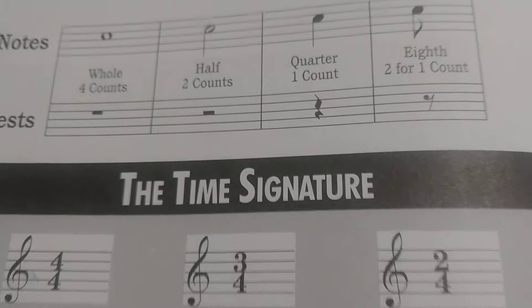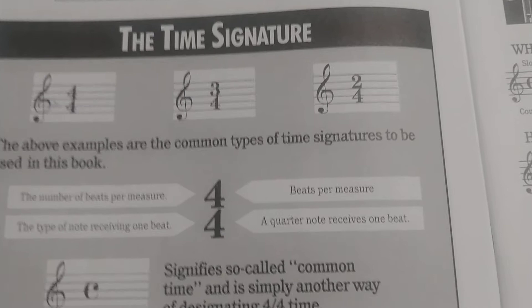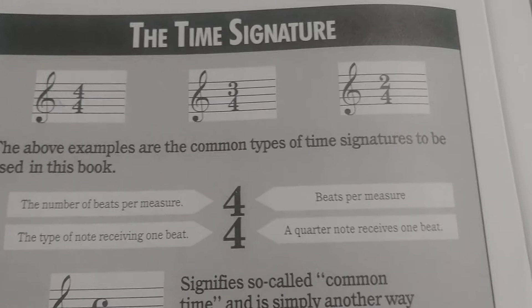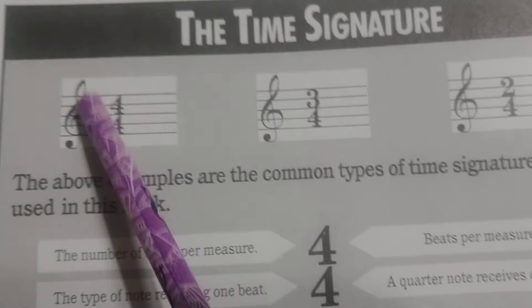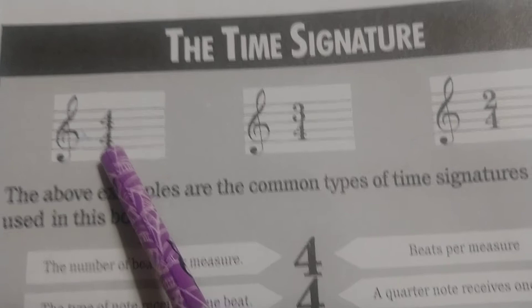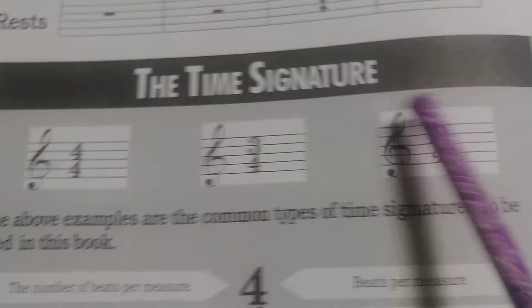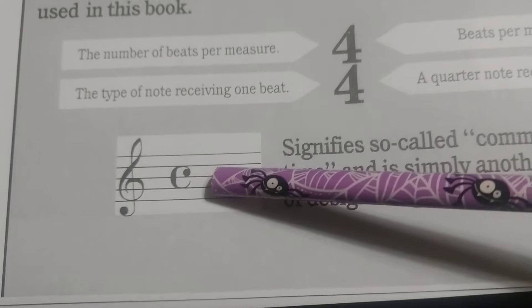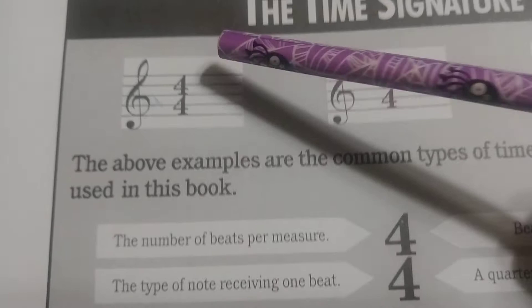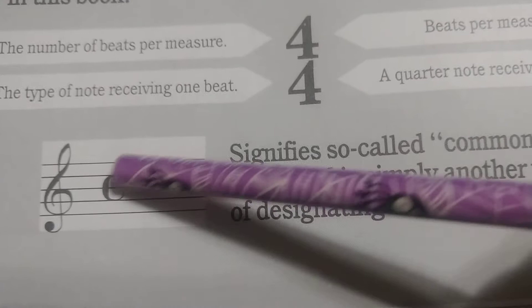The last thing we go over on page six is time signature. Time signature is very important because it tells us how many beats we have per measure. The bars that come down create our measures, and whatever goes inside those measures is dictated by the time signature at the beginning of our song or exercise. If we see a 4/4, that means there are four beats to every measure. 3/4 means we're counting to three, and 2/4 means counting to two. The majority of this book uses 4/4 time, often shown as the letter C, which stands for common time.